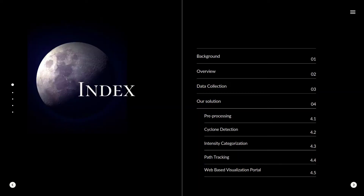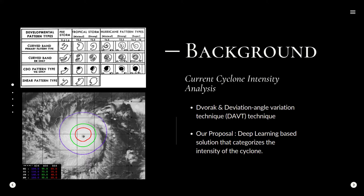Now we will explain our solution in a step-by-step manner. We read up about the way cyclone intensity estimation is achieved without using deep learning techniques. Analysts have been using the DVORAK and DAVT techniques for years to analyze cyclones. In the DVORAK method, analysts look at the cyclone image and compare it with a chart to see which pattern matches the most, and based on that they estimate the intensity. Since this method relies on human input at such early stages, it causes inconsistency in the prediction.